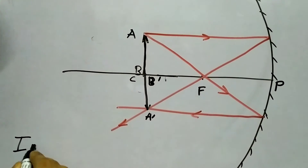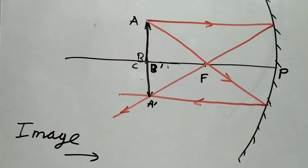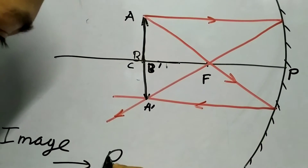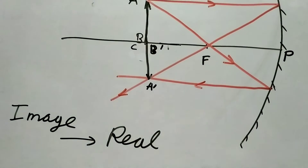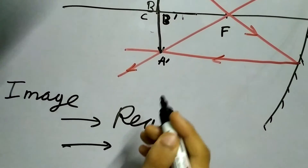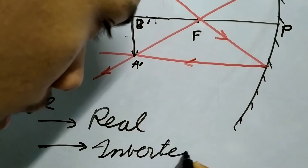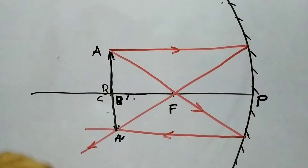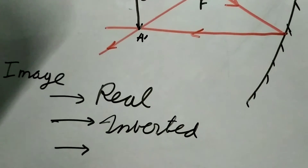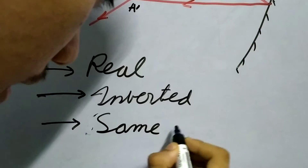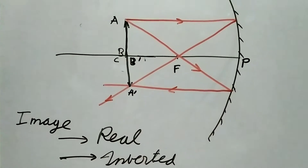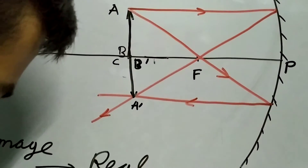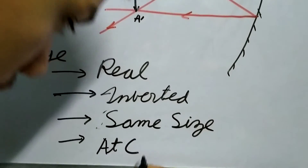Quickly, let us write down what are the properties of this image. Is it real or virtual? It is real, because the rays are actually coming to meet at a point, which is A dash. It is also inverted — clearly inverted. What is the size of this image? The size is equal — AB is equal to A dash B dash. The image is the same size. And where is it formed? It is formed at the center of curvature. So the object is at center of curvature, and the image will also form at the center of curvature, C.